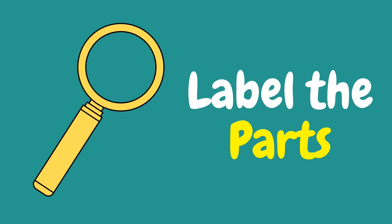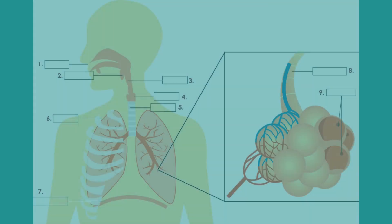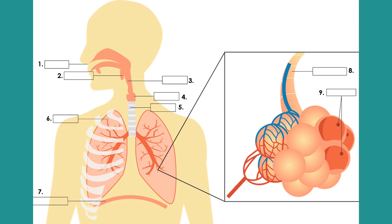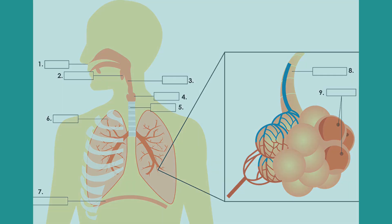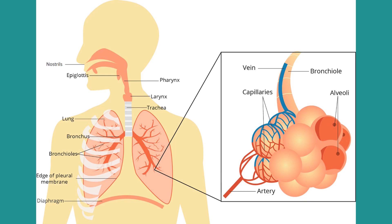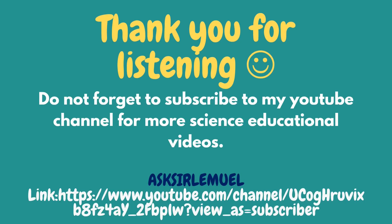To test your knowledge, I have prepared a simple assessment entitled 'Label the Parts.' Pause this part of the video and try to identify the different parts of the human respiratory system, and try to recall the function of each part. You may write your answers in the comment section below. Here are the answers for the assessment. I hope that you truly understood the different functions of each part of the human respiratory system. Thank you for listening. Do not forget to subscribe to my YouTube channel for more science educational videos.